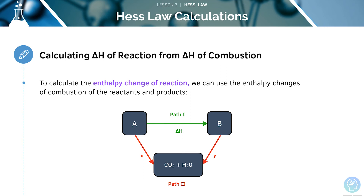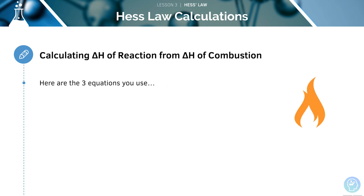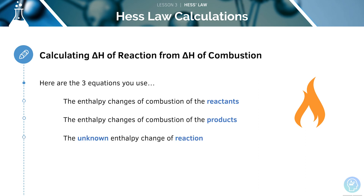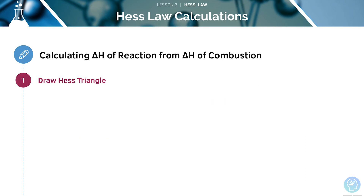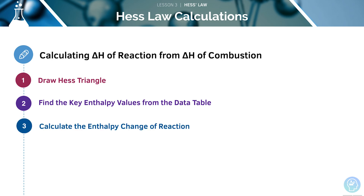Both the combustion of the reactants and the products will produce CO₂ and H₂O. In this triangle, CO₂ and H₂O are always at the bottom. This means that the enthalpy change of combustion can only be used for organic equations. To calculate the enthalpy change of the reaction from the enthalpy changes of combustion, you must use the enthalpy changes of combustion of the reactants and the products and the unknown enthalpy of the reaction.